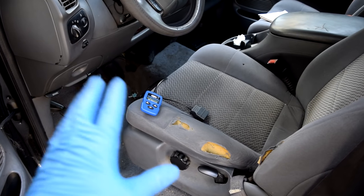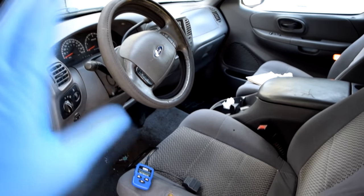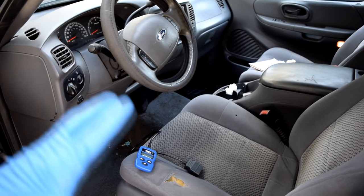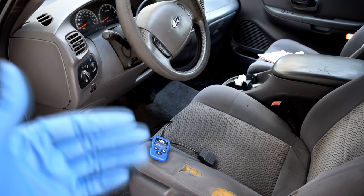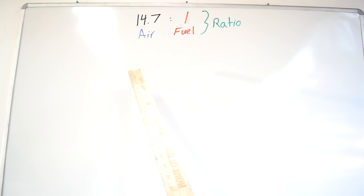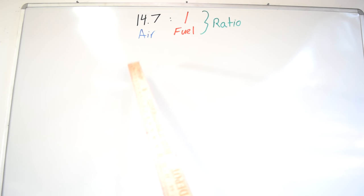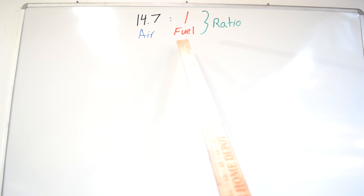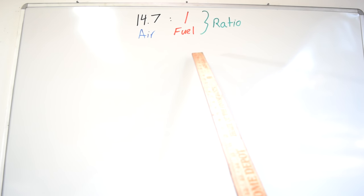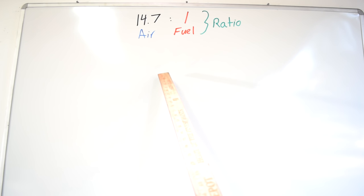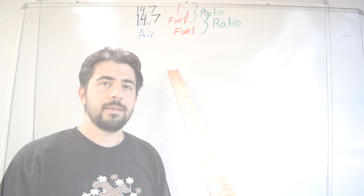Before I show you the fuel trim numbers on this car, let's take a couple of minutes and go over to the whiteboard so I can explain how they're calculated and what they exactly mean. In order for your catalytic converters to work properly and your car to pass emissions, your air-fuel mixture ratio needs to average exactly 14.7 parts of air to one part of fuel, and this ratio needs to be maintained under all engine loads and RPMs.